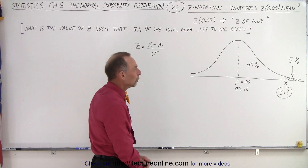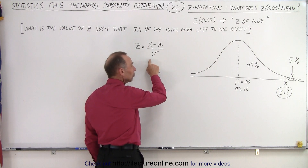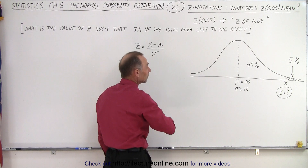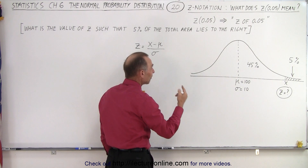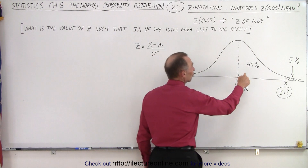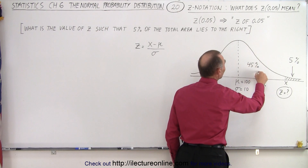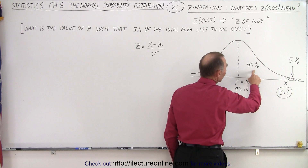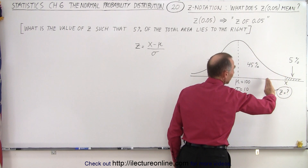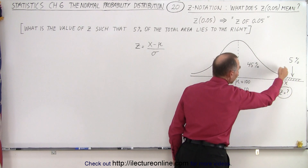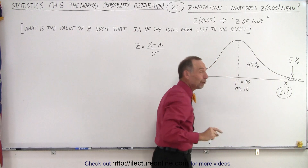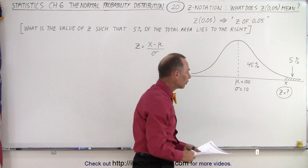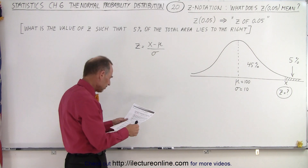We don't need to use this equation. We don't know the value for X, but we don't need to know it. We simply need to go to the table. What we need to do is find the value for Z that corresponds to 45%. So even though it says Z of 0.05, it actually refers to 5% being to the right of this line, and so we have to deal with the 45%. It's a little confusing. So we go to our table and find 45%.